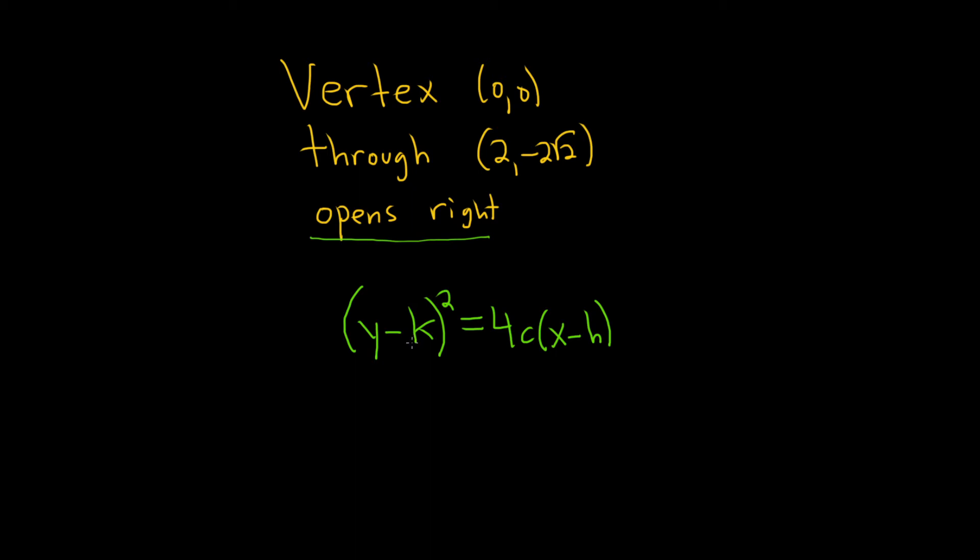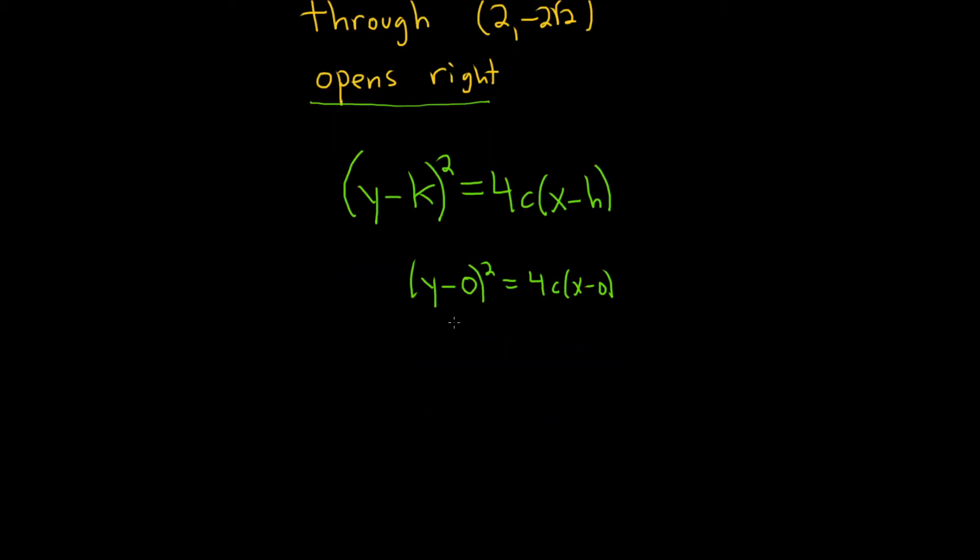Now we can plug in some things. Let's plug in the vertex first. The vertex is always h and k. If we have k = 0, that will give us (y - 0)² = 4c(x - 0). So we have y² = 4cx.